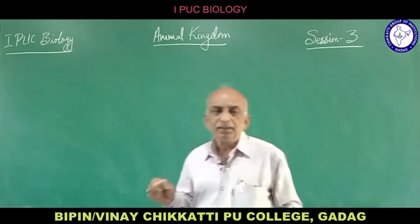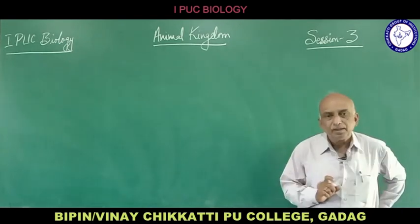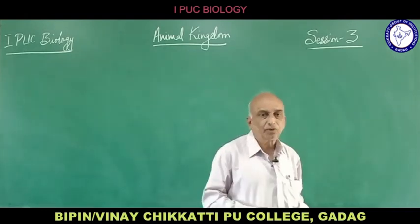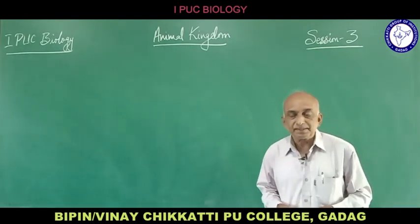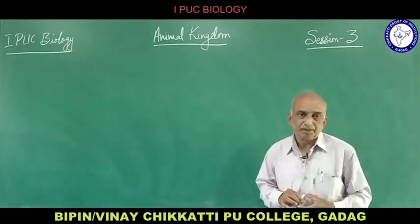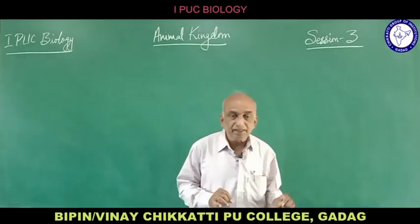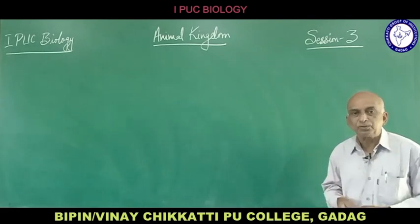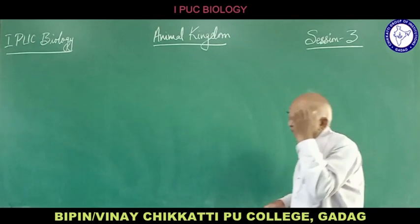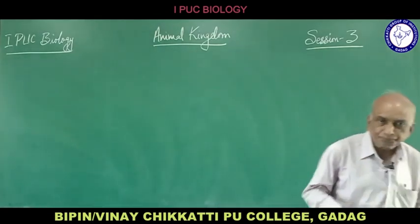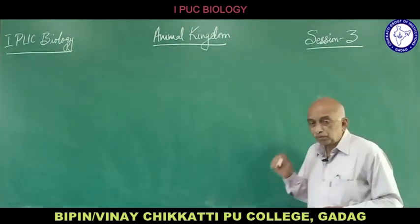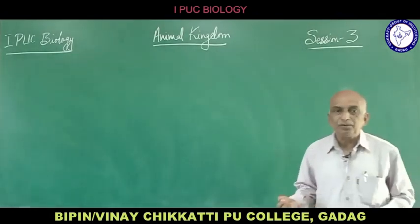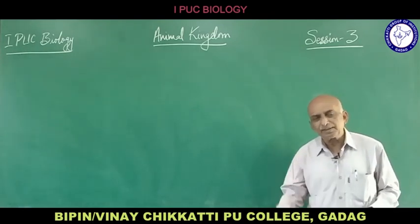Phylum Chordata is divided into three sub-phyla — Urochordata, Cephalochordata and Vertebrata — based on the nature of the notochord. In Urochordata, the notochord is present only in the tail region. In Cephalochordata, the notochord extends from head to tail and is present throughout its lifetime. In Vertebrata, the notochord is transformed and develops into the vertebral column or backbone.